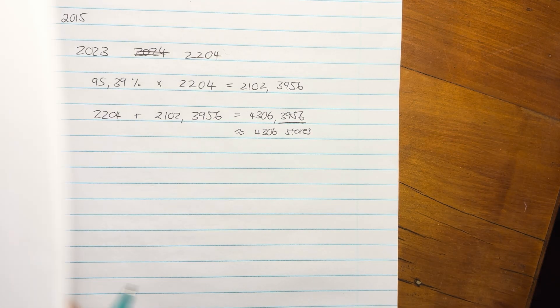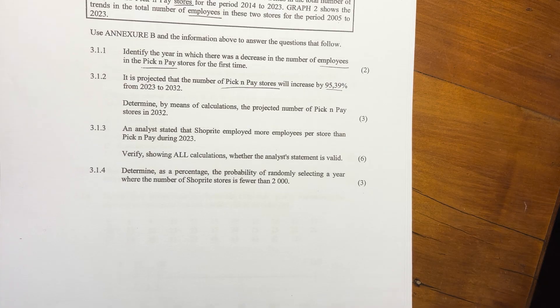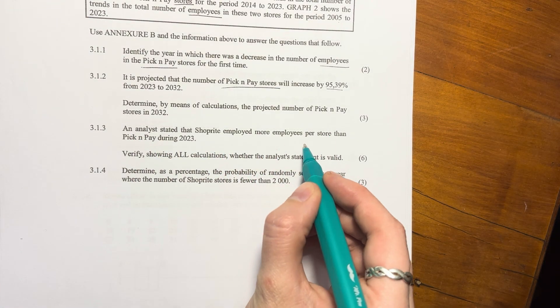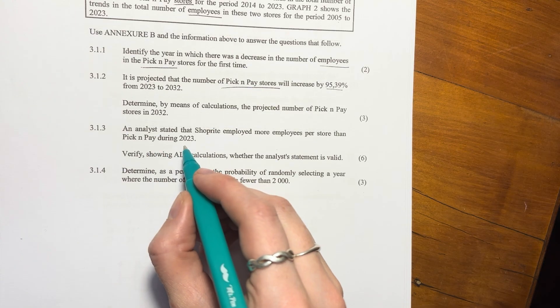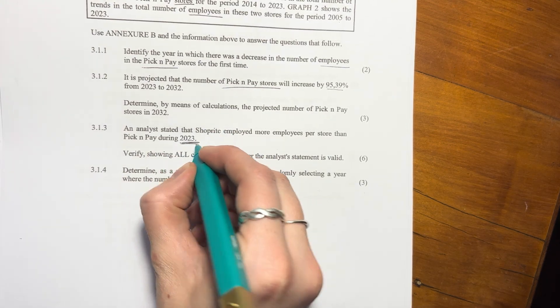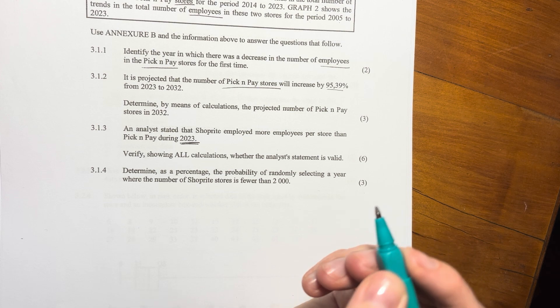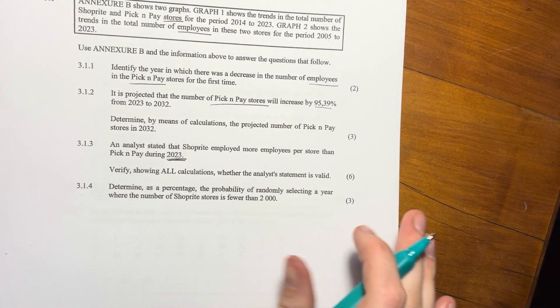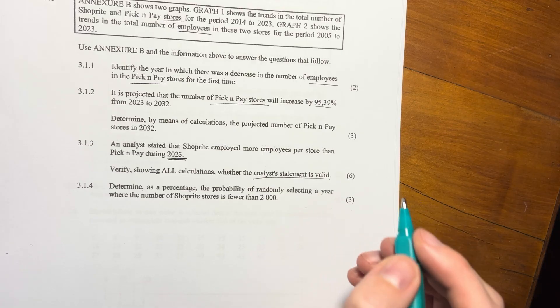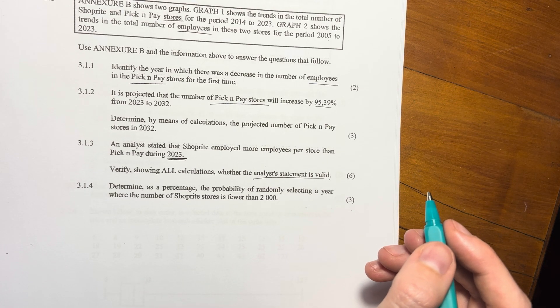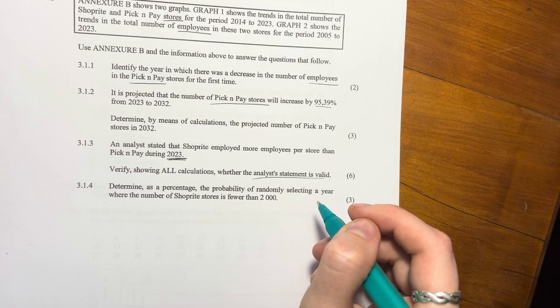Let's move on to 3.1.3. An analyst stated that ShopRite employed more employees per store than Pick n Pay during 2023. So only that year. Verify showing all calculations whether the analyst statement is true. So big thing with this is you do the calculation and then you have to say, is it valid or not? You can't just do the calculation and be like, it is what it is. You actually have to say yes or no.